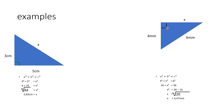Example number two. Remember, the theorem only applies to a right angled triangle. My three sides: my unknown side is X, one side is 4 millimeters, and my hypotenuse in this example is 6 millimeters.